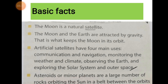Monitoring the weather and climate means tracking and reporting weather and atmospheric conditions. Minor planets are a large number of rocks orbiting the sun in a belt between the orbits — these are asteroids, which revolve around the sun in a belt in their own orbits.